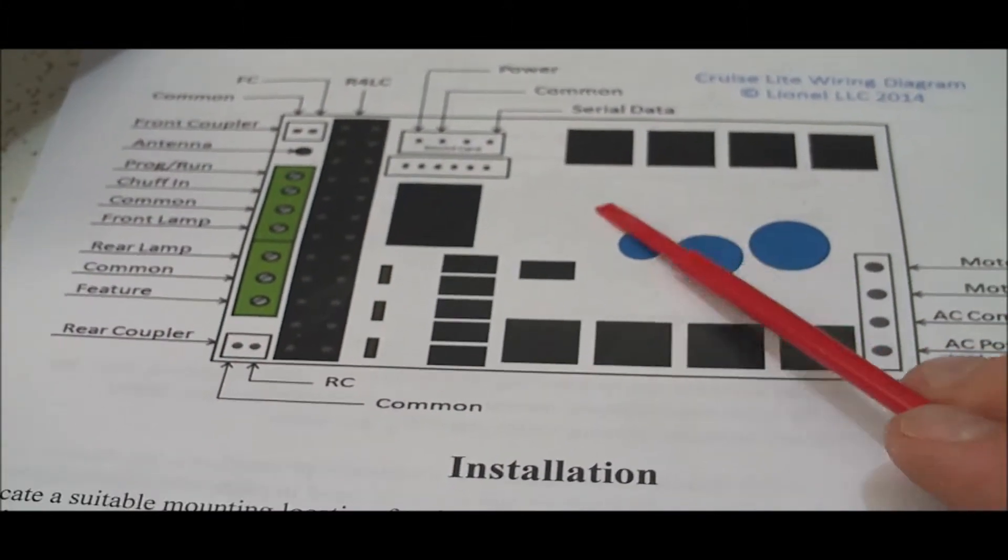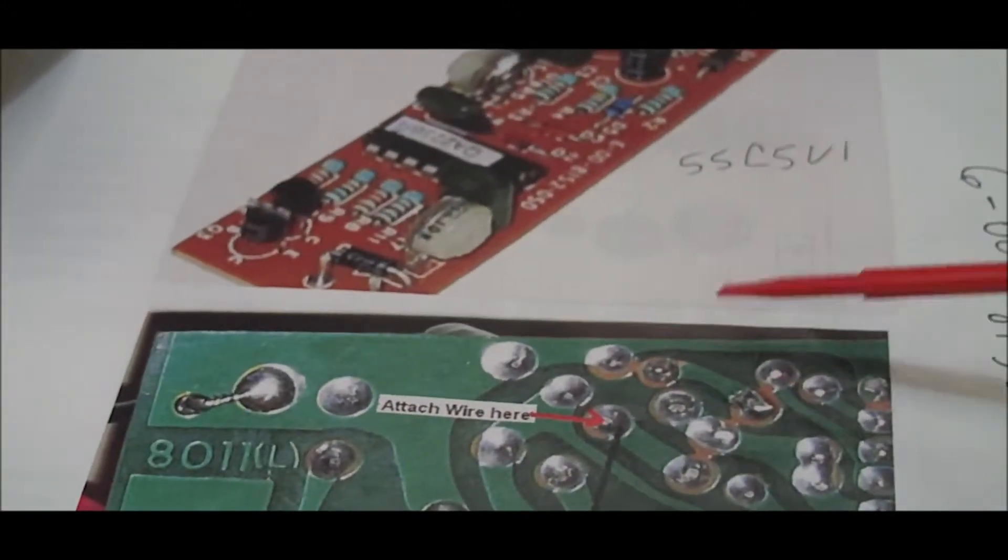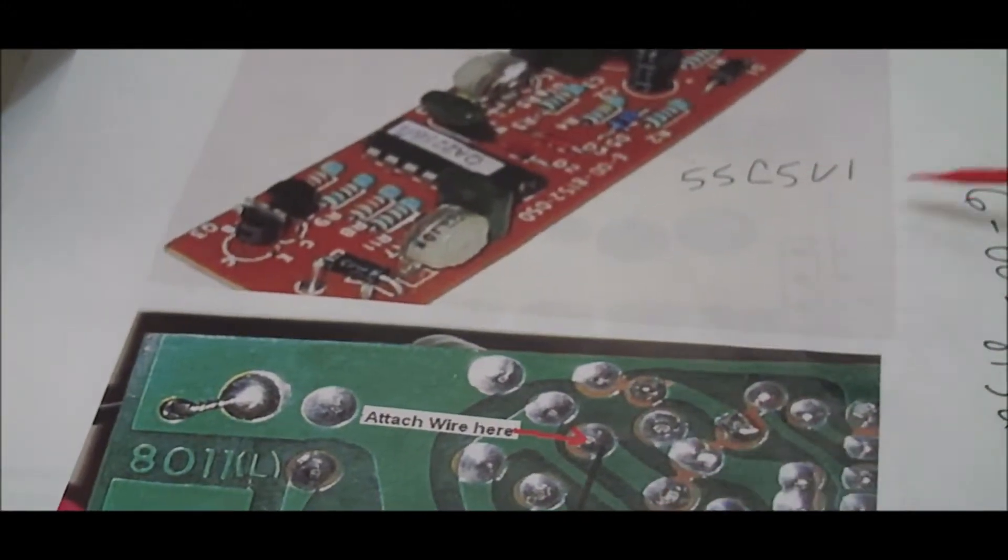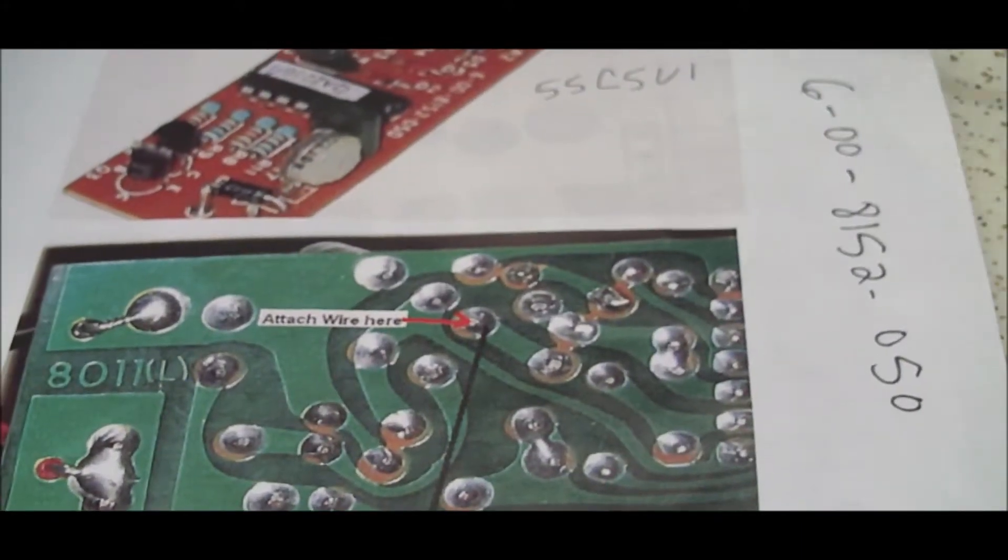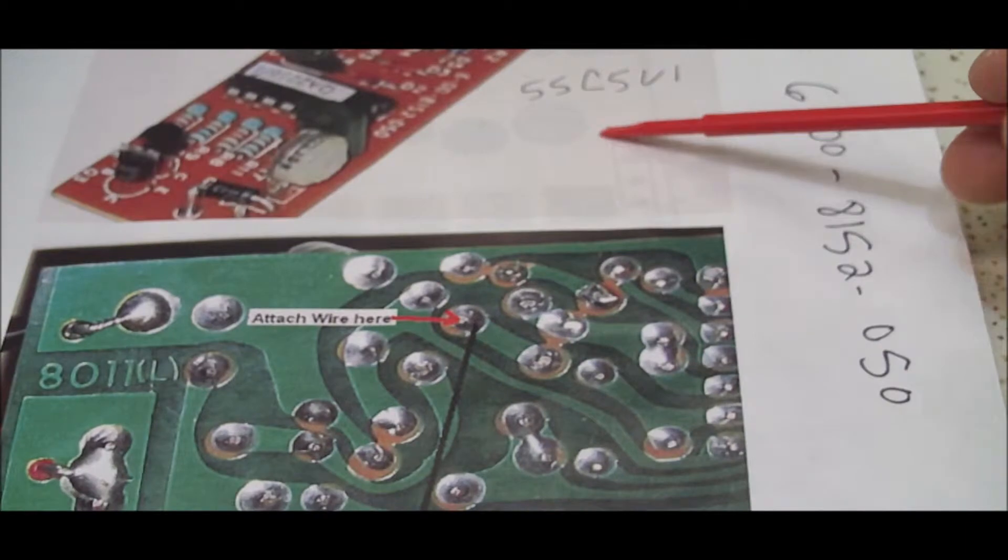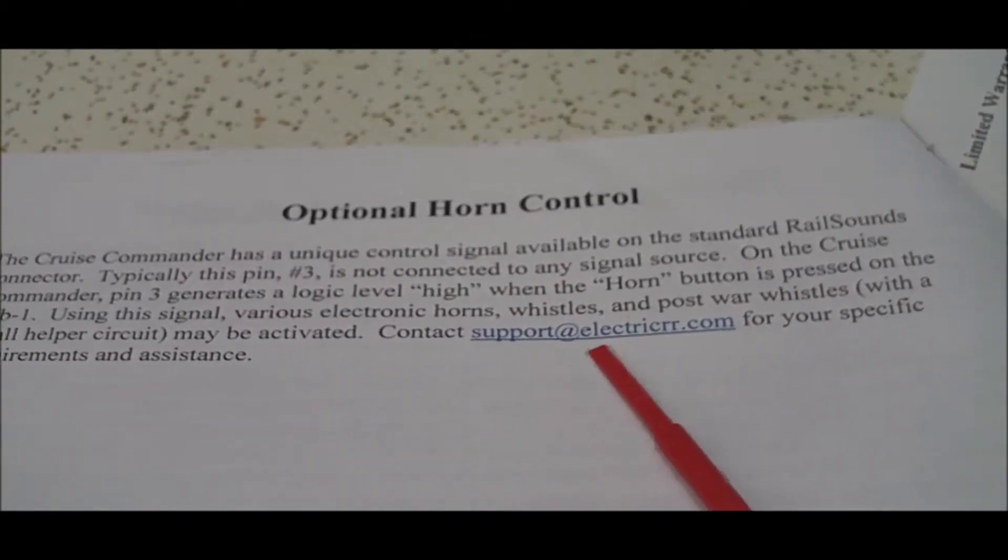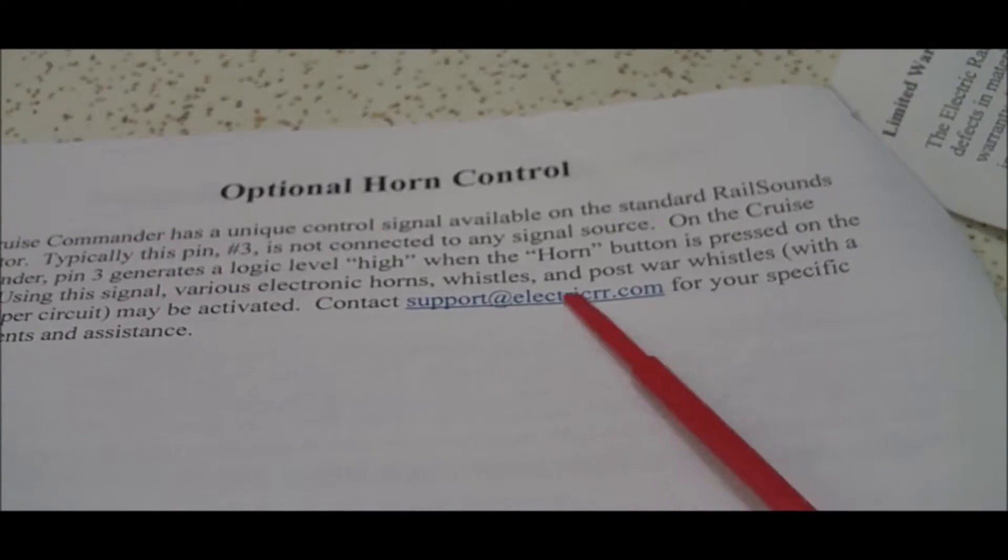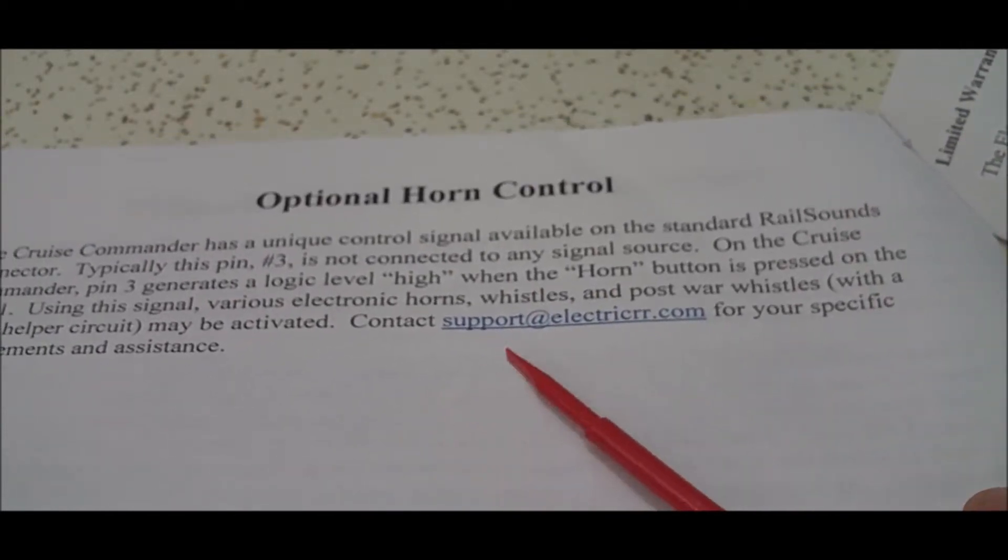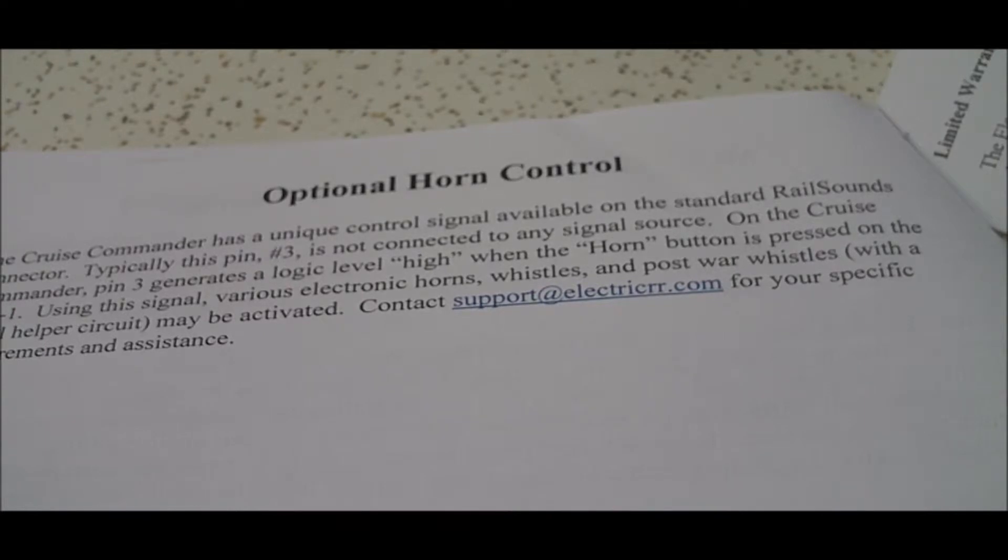Thinking about going with the cruise commander or any of the cruise products, I'm assuming that it's going to be the same deal for the other ones. I'm not totally sure but I'm going to take a guess. This actually came off the cruise commander instruction manual. It talks about that in the cruise light manual, it talks about operational horn control. I contacted Electric Railroad and the gentleman replied back with there's so many out there it's hard to say, so it was really kind of a generic response. Really didn't know what to take of that.